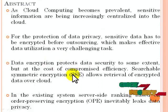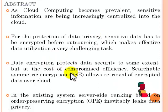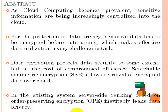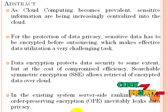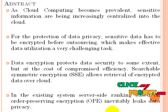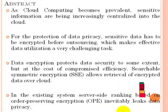The user cannot trust the cloud server blindly. Data encryption provides security to some extent, but at the cost of compromised efficiency. Whenever the user needs a file from the cloud server, they simply create a query — a set of words. The user sends the query to the cloud server, which then searches the file content and produces the top-K files.